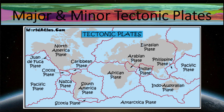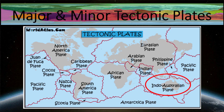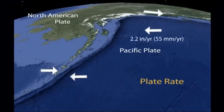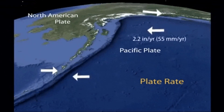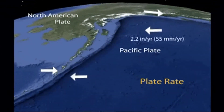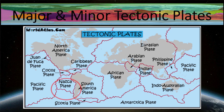There are seven major plates, named after the landforms found on them. The seven major plates are the African plate, Antarctic plate, Eurasian plate, North American plate, South American plate, Indo-Australian plate, and Pacific plate. The largest plate is the Pacific plate; most of it is located under the ocean and it is moving northwest at a speed of around 2.2 inches per year. Some of the minor plates include the Arabian plate, Caribbean plate, Nazca plate, and Scotia plate.